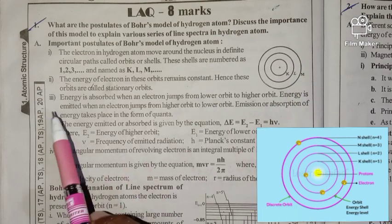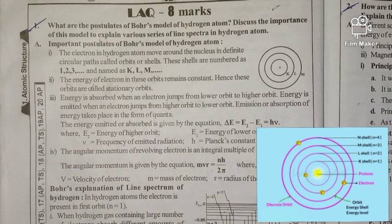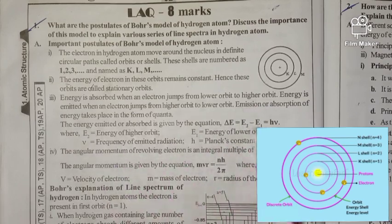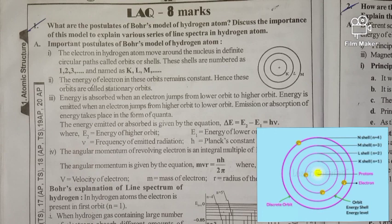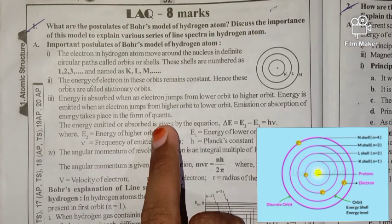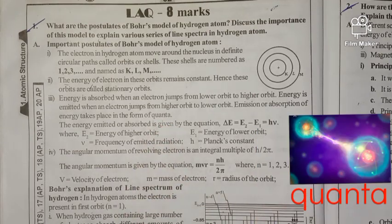Energy is emitted when an electron jumps from a higher orbit to a lower orbit. The energy is emitted by the electron in the form of quanta — that is, tiny discrete particles of energy.